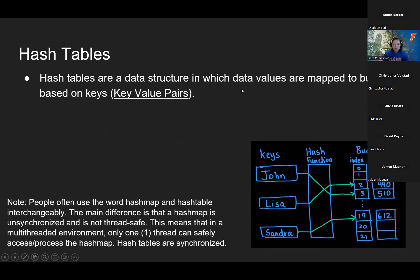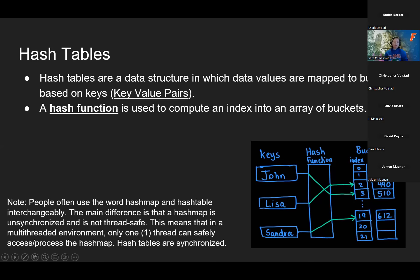Hash tables are a data structure in which every value that you want to store is basically mapped to buckets based on some keys. If you think about it in terms of a C++ structure, which is a map — hash tables are implemented using maps. You have the key, which is essentially an index, and then you have the values, which are like the buckets where you store the data. A hash function is used to compute the index at which you will store the data. You run a value through the hash function and it gives you the index location where you put the hashed value into the buckets.